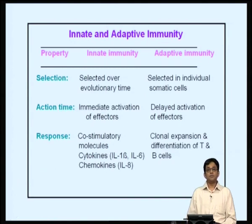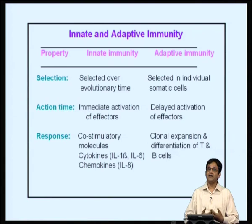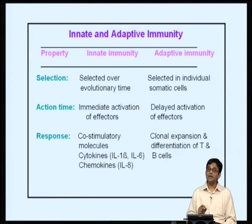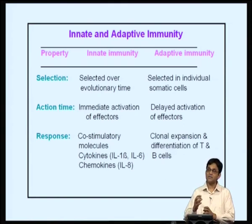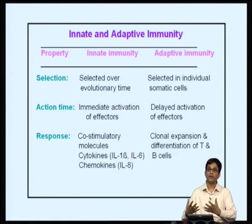The innate immune response has been selected over evolutionary time, whereas adaptive immune response selection is done on the basis of individual somatic cells — cells that express a particular receptor are selected for, amplified, and those specific for the antigens are the ones that proliferate.